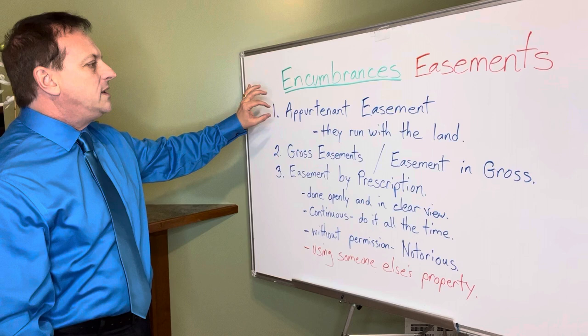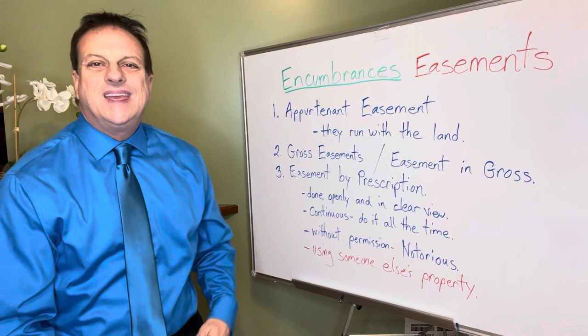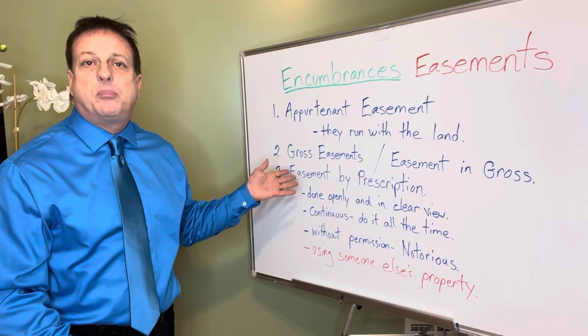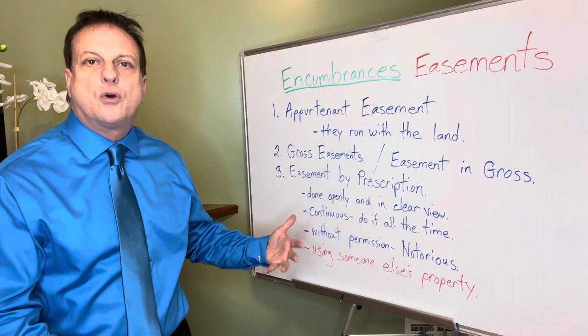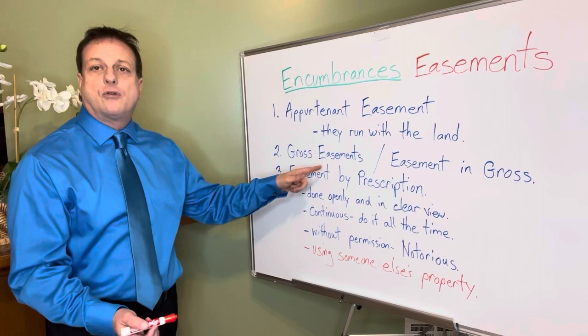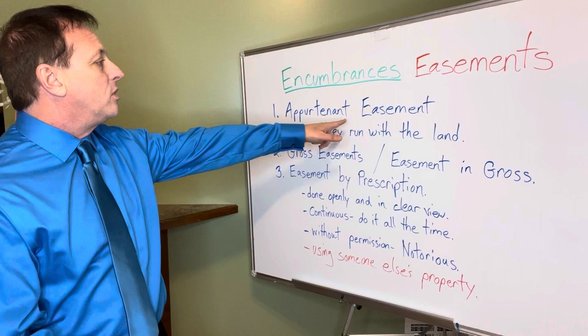Number two is a gross easement, also called an easement in gross. These are personal in nature. An example would be billboards on land — they are not tied to any specific property, they are personal in nature, and usually owned by a person or company. They are commercial in nature. A billboard is a classic example of a gross easement — it's not an appurtenant easement.